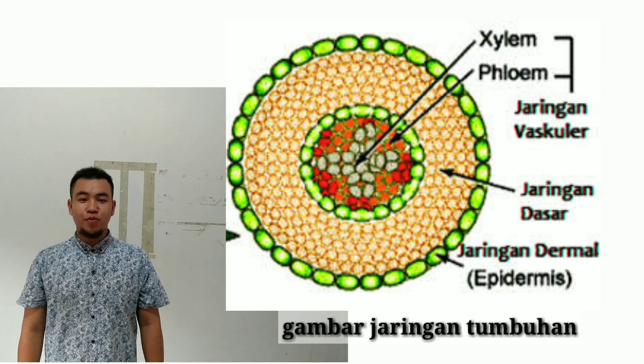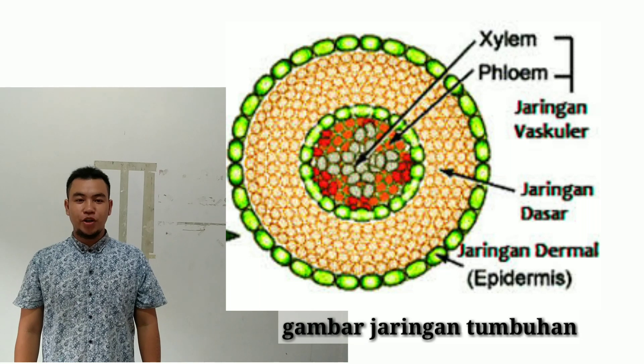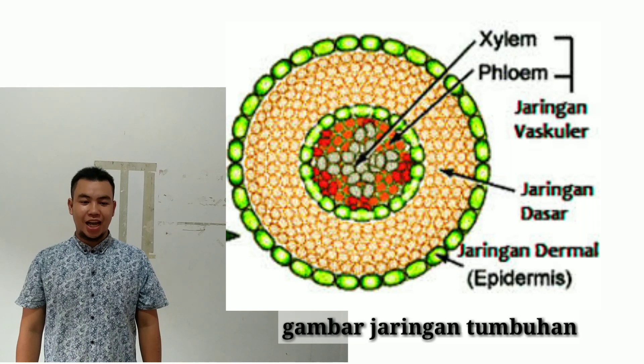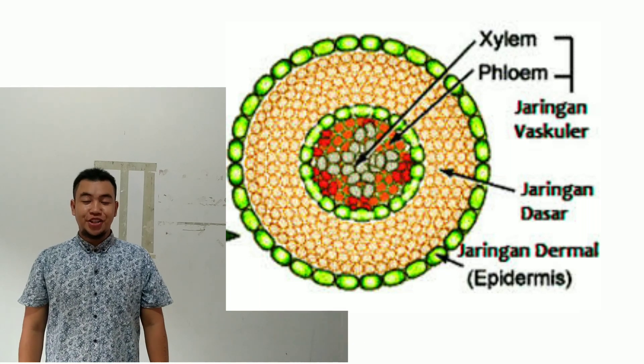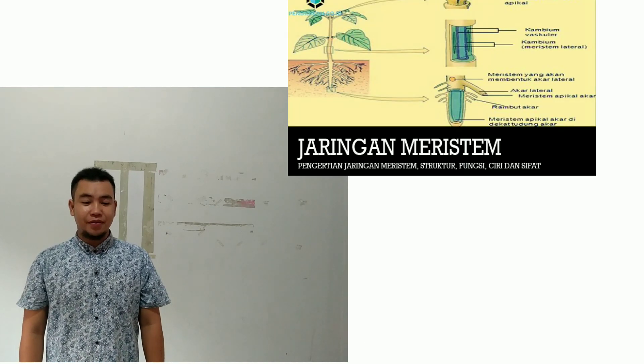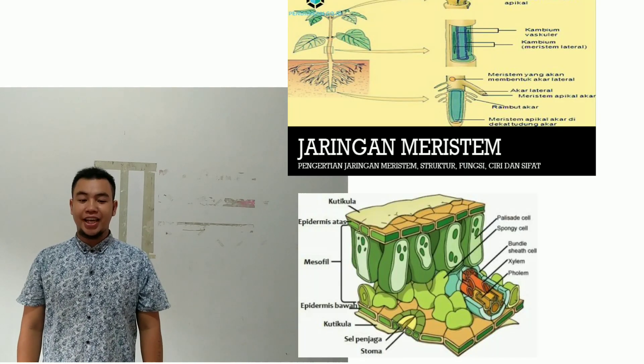Jaringan tumbuhan dibagi dua jaringan, yaitu meristem dan jaringan dewasa.